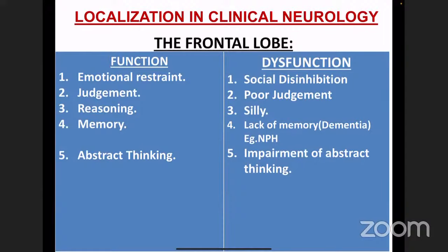The frontal lobe. Functions of the frontal lobe include emotional restraint, judgment, reasoning, memory, and abstract thinking. Dysfunction presents as social disinhibition, poor judgment, silly behavior, and lack of memory. The immediate memory goes to the dorsolateral prefrontal cortex. Dementia — especially normal pressure hydrocephalus — presents with a triad of dementia, gait apraxia, and bladder disturbances, along with impairment of abstract thinking.